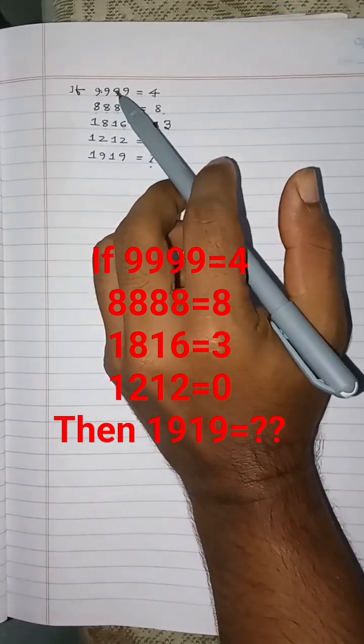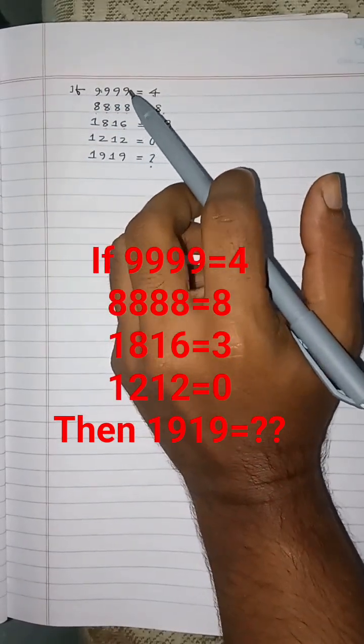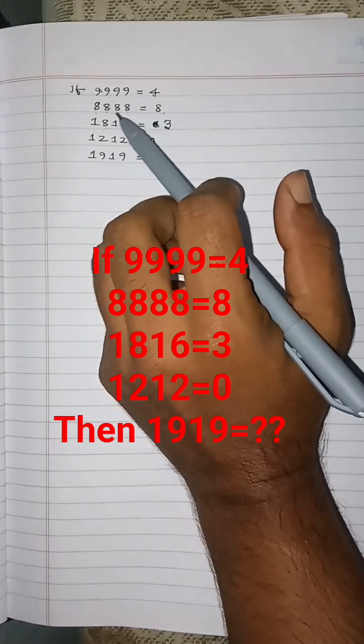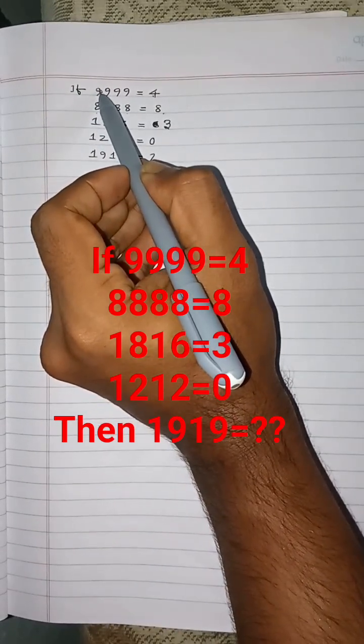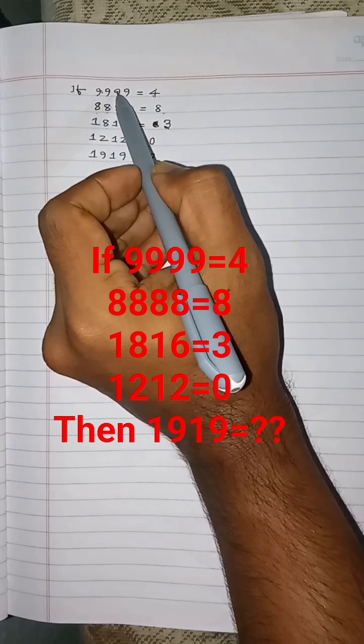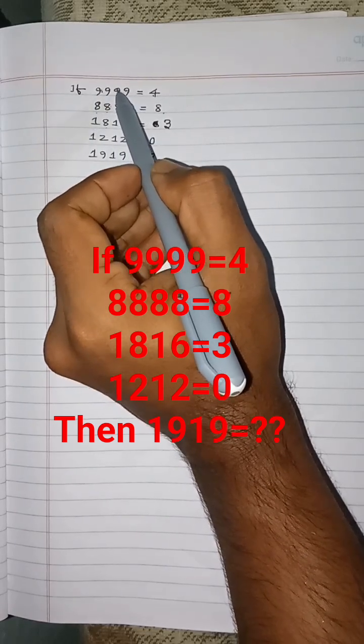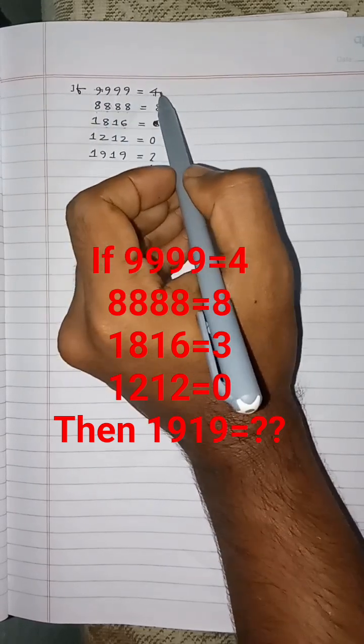Just calculate the number of enclosed circles in each number, in each digit. This 9, here one circle is there, one enclosed circle is there. Here one enclosed circle, here one enclosed circle, here one. So total 1, 2, 3, 4, four enclosed circles, so 4.